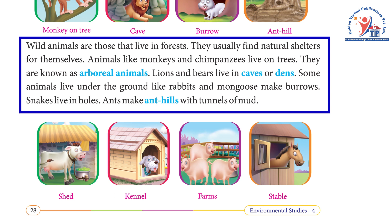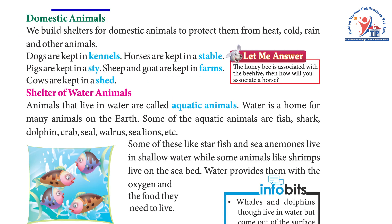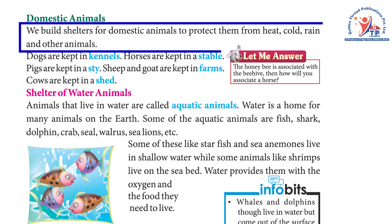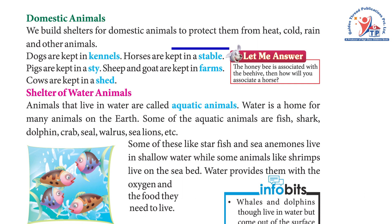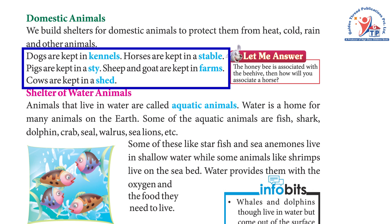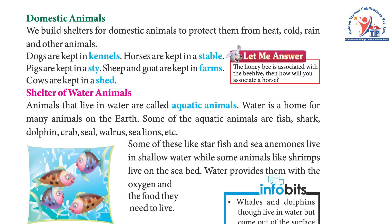Domestic animals: we build shelters for domestic animals to protect them from heat, cold, rain, and other animals. Dogs are kept in kennels. Horses are kept in a stable. Pigs are kept in a sty. Sheep and goats are kept in farms. Cows are kept in a shed.